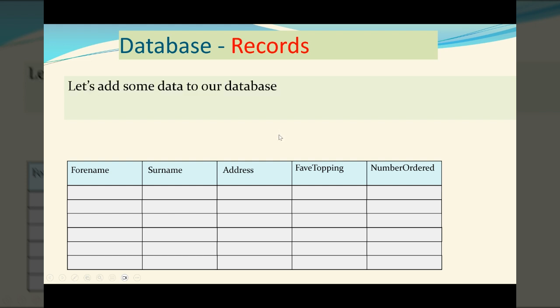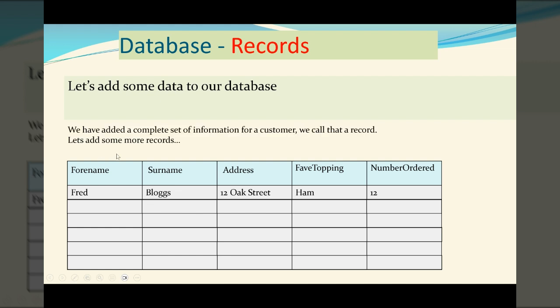Next keyword is records. So let's add some data to our database. Here we have Fred Bloggs, 12 Oak Street, Ham, favorite topping of ham, and 12 pizzas have been ordered. Now that's one complete set of data for one of the people that we're storing in our database. And we call a complete set of data a record.